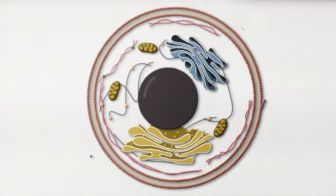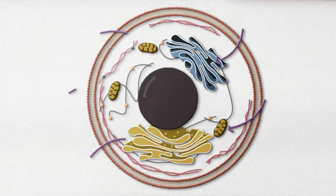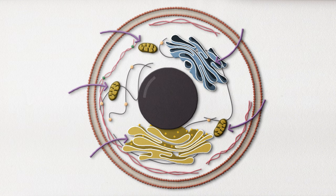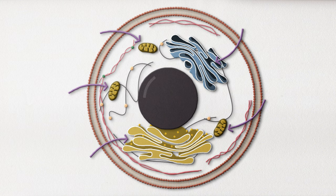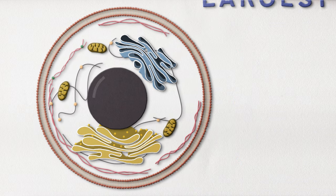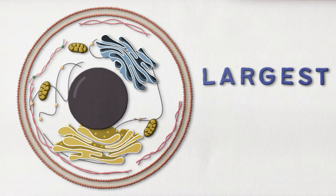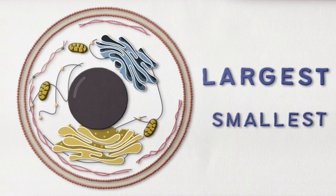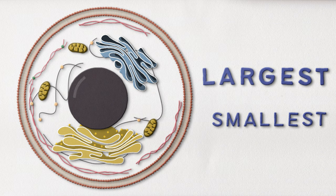Much like the organelles that the cytoskeleton helps keep in order, we're all about organization here as well. We're going to talk about the filaments from largest to smallest. So, microtubules, you're up first.